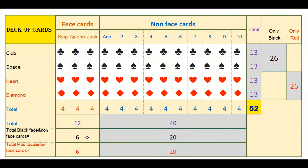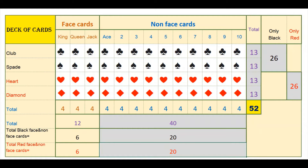Total black face cards are 6, and similarly red face cards are also 6. Since total black cards are 26, black non-face cards are 26 minus 6 equals 20. Similarly, total red non-face cards are also 20. Please remember all these numbers — it will be easy to solve the problems.